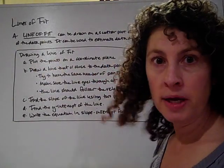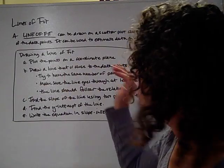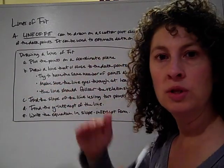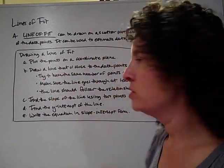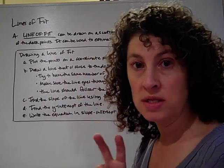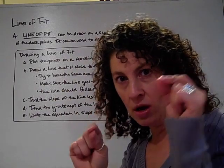We're going to start by plotting the points on a coordinate plane. Next, we're going to draw a line that is close to the data points. We're going to try to have the same number of points above and below the line. So I want to try to have the extras evenly distributed on both sides. I want to make sure the line goes through at least two points, because I'm going to use those two points to write an equation.